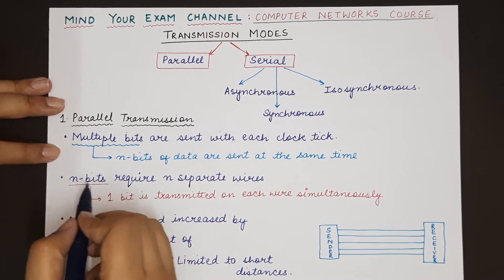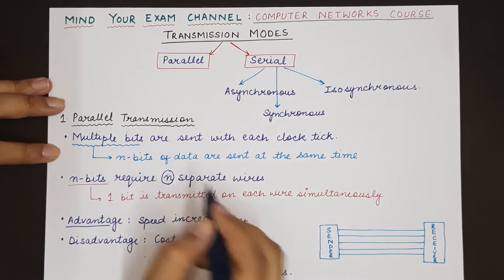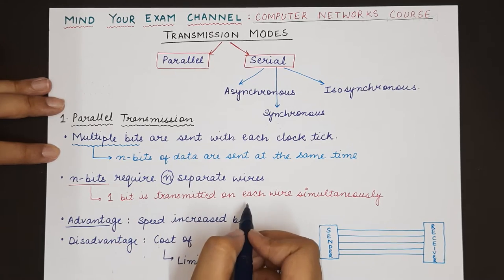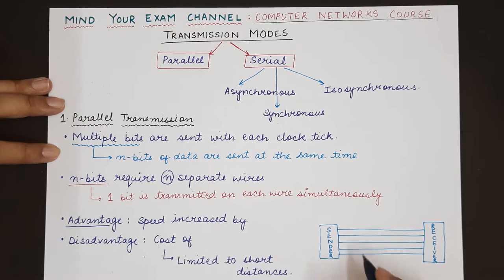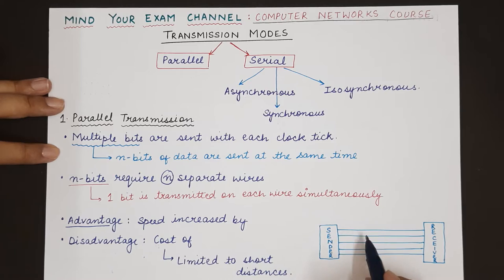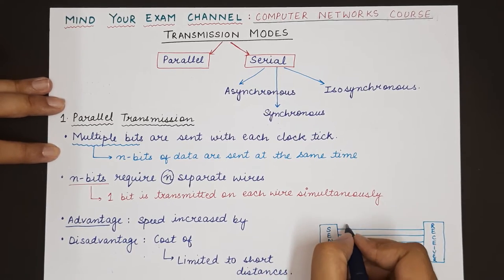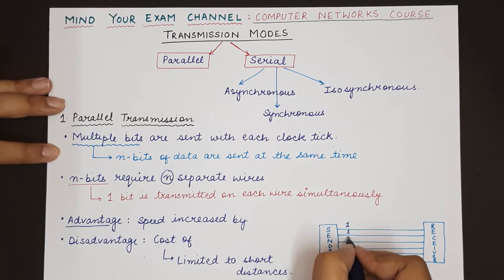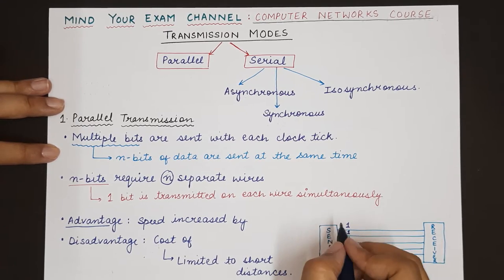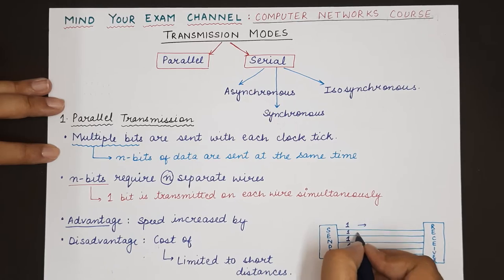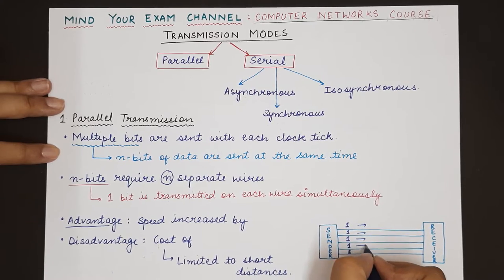N bits will require n separate wires such that one bit will be transmitted on each wire and each of these bits will then travel simultaneously. So if this is a sender who wants to send 5 bits in parallel, then this sender will maintain 5 different channels of communication.